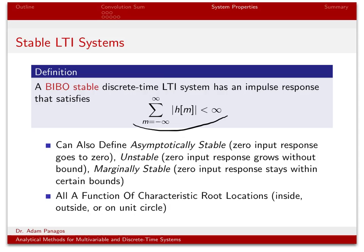BIBO stable is just one type of stability. We can also talk about asymptotically stable, unstable, and marginally stable systems. These concepts all have to do with the location of the characteristic roots. If all roots are inside the unit circle — magnitude less than one — then the system is asymptotically stable. If any root has magnitude greater than one, it's unstable. If roots have magnitude equal to one, that's marginally stable.